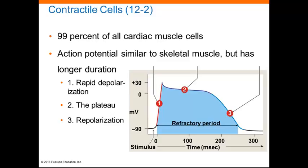An action potential in a ventricular contractile cell proceeds in three steps. The first step is a rapid depolarization due to sodium ion influx. Then you have this plateau — level number two — mostly due to sodium pumping out and calcium influx, both extracellular calcium and sarcoplasmic reticulum calcium.